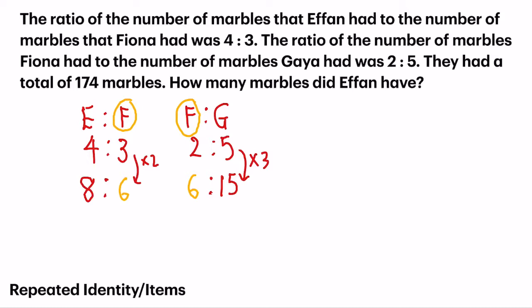Now, the next step. Let's look at the question. They had a total of 174 marbles. So first step, I can find out the total number of units in the 3 of them, which is 8 plus 6 plus 15. This 8 units refers to Yvonne's units, 6 refers to Fiona, and notice that I do not add twice because it's the same person. And the last person is Gaia, who has 15 units.